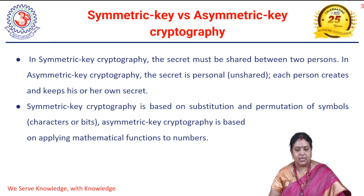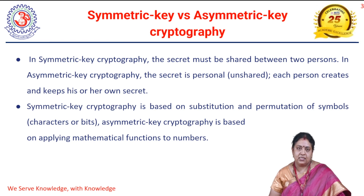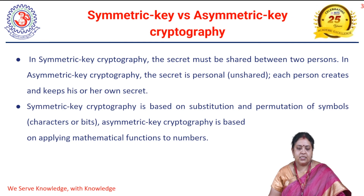In asymmetric key cryptography, the secret is personal — the private key is personal and is not shared with anyone. Each person creates and keeps his or her own secret. Every entity, every system, is going to have a pair of keys: one we call it as a private key and one we call it as a public key. This public key is announced to everyone, whereas the private key is kept secret. That is the main difference between symmetric and asymmetric.